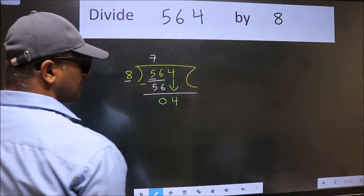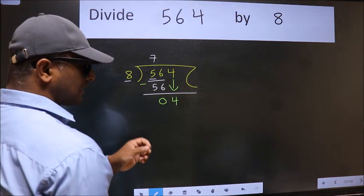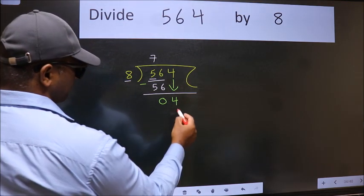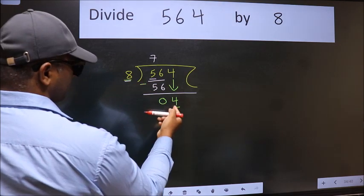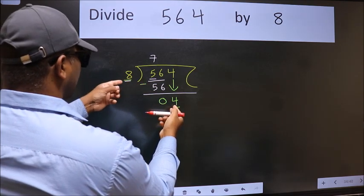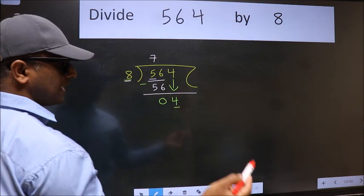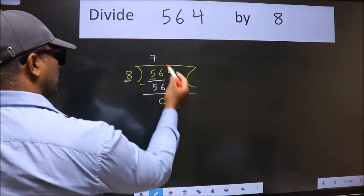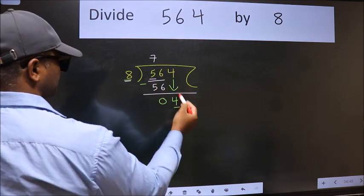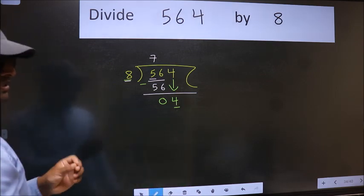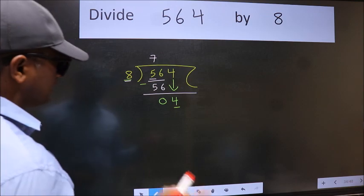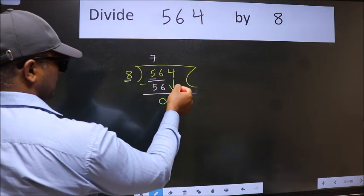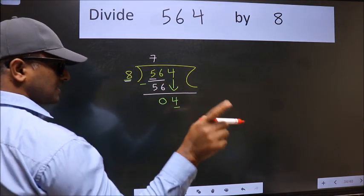After this step, the mistake happens and the mistake is this. Here we have 4 and here 8. 4 is smaller than 8. So what many do is they directly put dot, take 0, which is wrong. Why is it wrong?